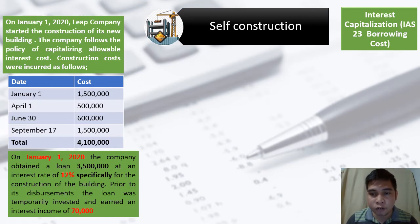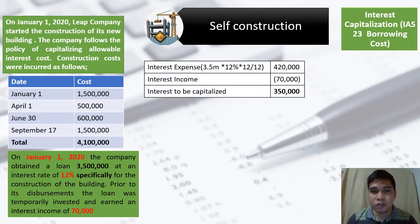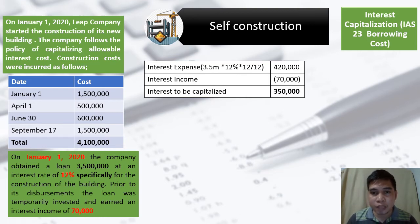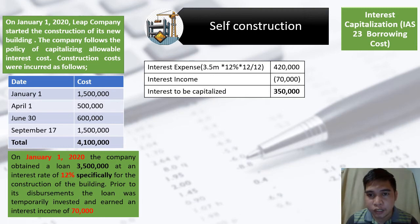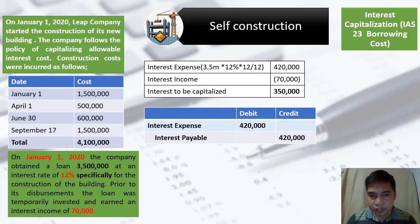Since the loan was specifically borrowed for the construction, we follow borrowing cost treatment under specific borrowing. The computation: recognize the interest expense involved, then deduct the interest income earned to get the interest to be capitalized. The interest expense incurred is 420,000 — computed as 3.5 million times 12% times 12/12, since it was obtained on January 1. Deduct the interest income earned of 70,000 (given). Therefore, the interest to be capitalized is 350,000.